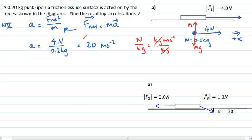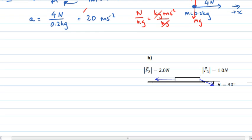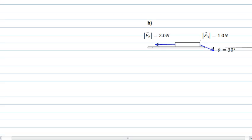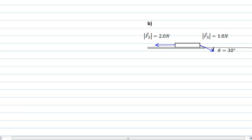So let's now turn our attention to part B. We want to find the acceleration resulting from the forces acting on the puck that are shown. So now we've got two forces. So once again, let's start off by drawing a free body diagram. This point represents my puck. And I've got two forces acting.